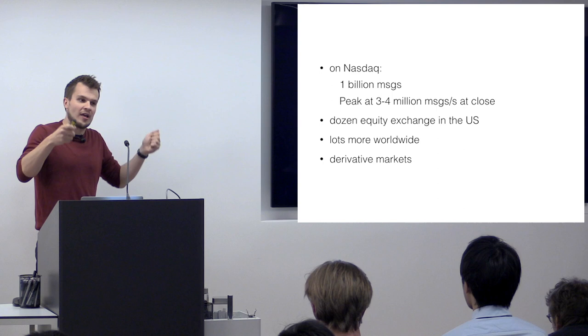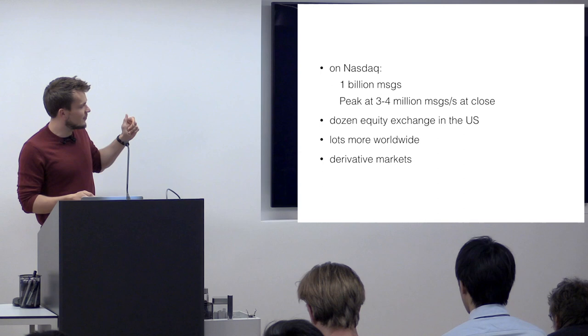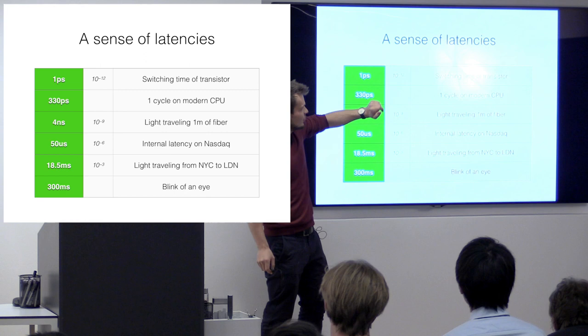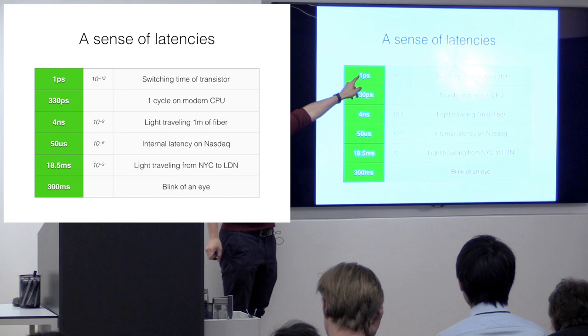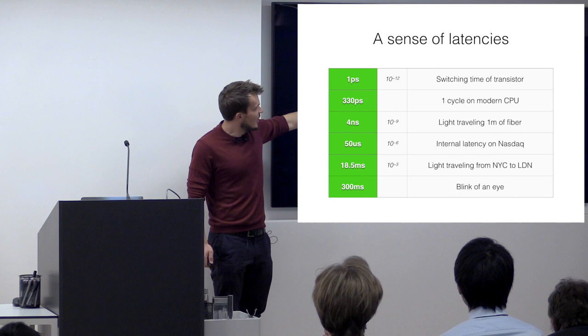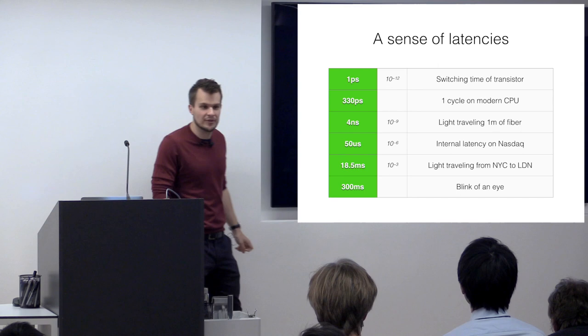Before looking at actual numbers to figure out how fast we need to be, let me briefly remind everyone of some latency terminology. Starting at the very top is one picosecond — 10 to the negative 12 seconds — which is the fastest switching time of a transistor. Then it goes from picoseconds to nanoseconds to microseconds to milliseconds. At the bottom is 300 milliseconds, the blink of an eye. The area we'll mostly concern ourselves with is nanoseconds and microseconds.